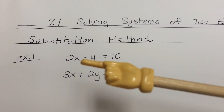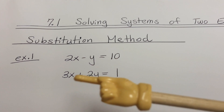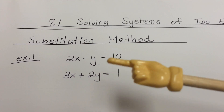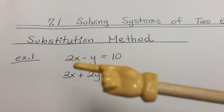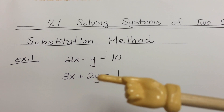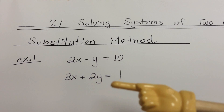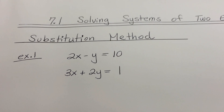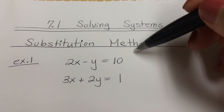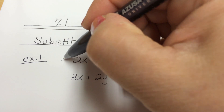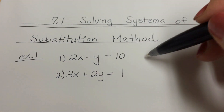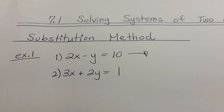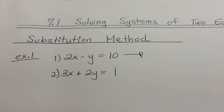It really doesn't matter if you get x or y by itself — there is no wrong or right. If you have a coefficient in front of either x or y and work with that one, you'll have some fractions to deal with, but we should be stronger with our fractions so it shouldn't really make a difference. I'm going to call this equation number 1 and this equation number 2, so we can refer to them.